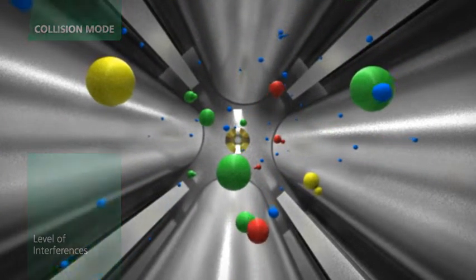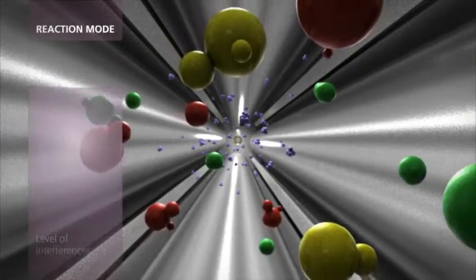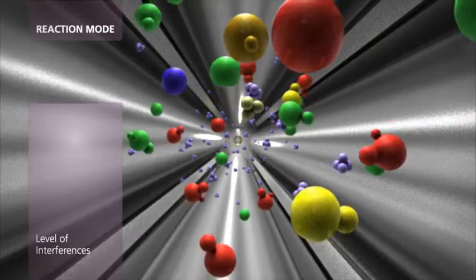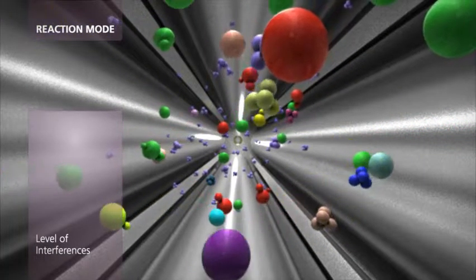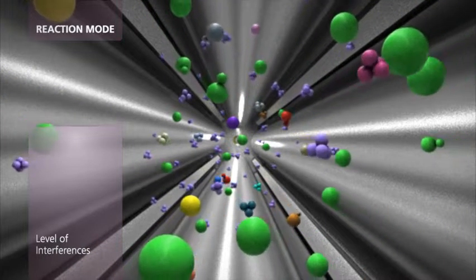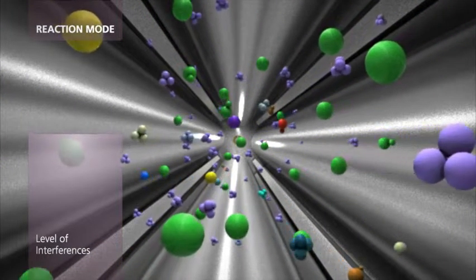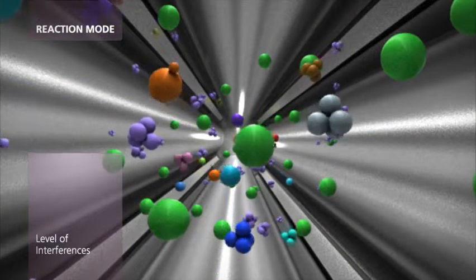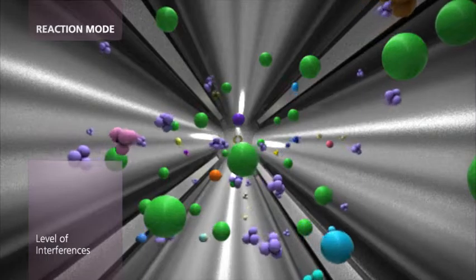When the level of interferences is high, dynamic reaction mode provides the best detection limits. Using a highly reactive gas, interferences are specifically targeted and removed through chemical reactions. When running as a dynamic reaction cell, a scanning quadrupole minimizes the formation of new polyatomic interferences while retaining analyte sensitivity.